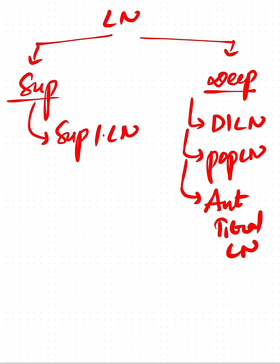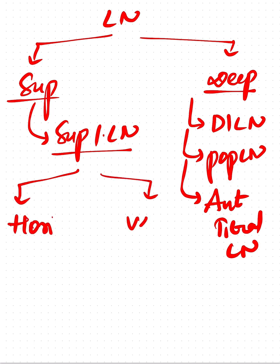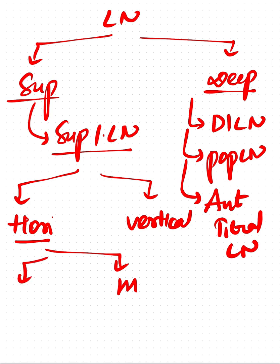The superficial inguinal lymph nodes have been again classified into the horizontal members and the vertical members. The horizontal group is again classified into the medial members and the lateral members. This is a brief overview on the lymphatic drainage of the lower limb, mainly about the lymph nodes.